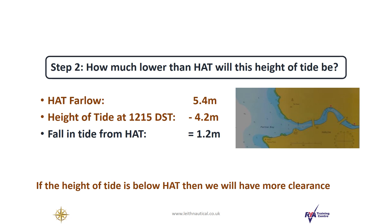Step two: how much lower than HAT will this height of tide be? The HAT at Farlow is 5.4 meters, and we found the predicted height of tide at 1215 will be 4.2 meters. The fall in tide from HAT will be the difference between these two heights. In this example, it is 1.2 meters. If the height of tide is below HAT, then we will have more clearance, and in this case we have found the extra clearance to be 1.2 meters.